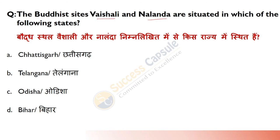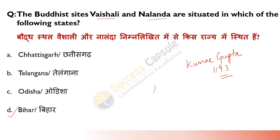Vaishali aur Nalanda kis state mein situated hain? Bahut easy question hai — answer hai Bihar. Nalanda apni university ke liye jaana jaata hai. Kitni baar question poochha jaata hai ki Nalanda University ko kisne found kiya tha — toh Gupta dynasty ne. Vaishali Lichavis ki capital city thi aur yeh world ka pehla republic tha. Lord Buddha ka last sermon bhi yahan deliver kiya gaya tha.